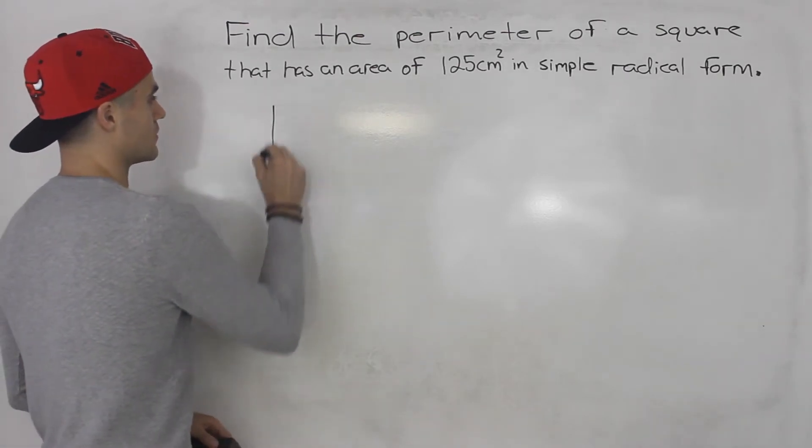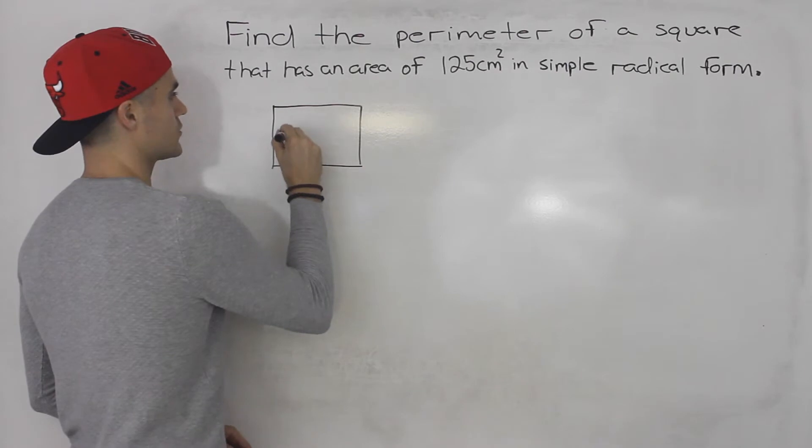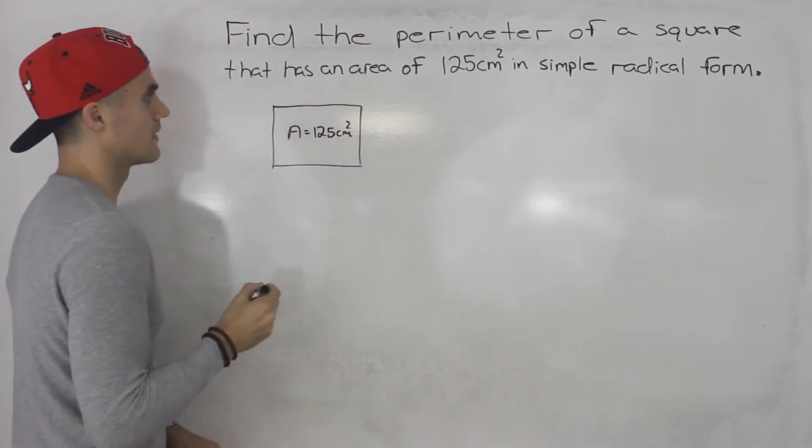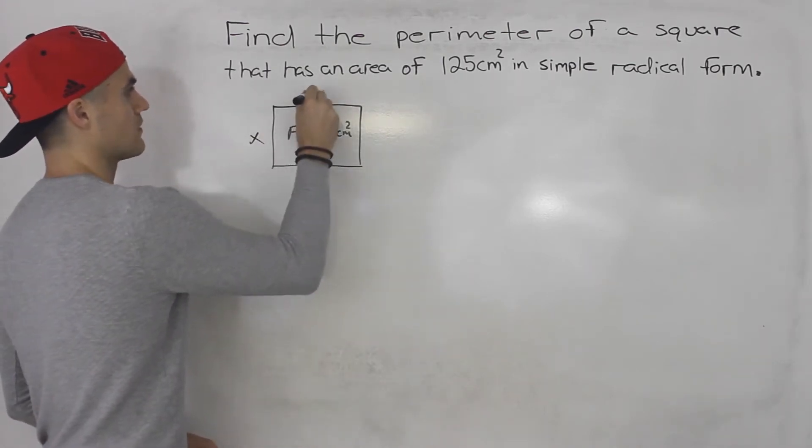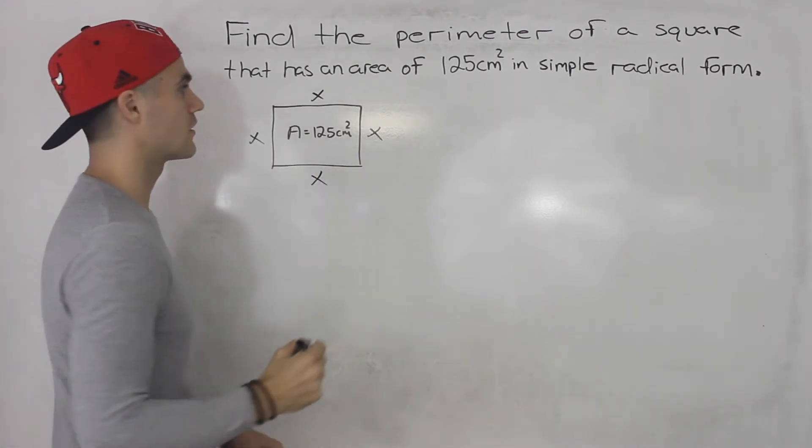So we have a square here. We're told its area is 125 centimeters squared and we have to find the perimeter of it. And we know that a square, all four lengths are equal.